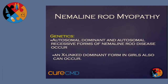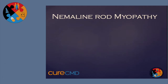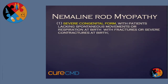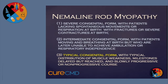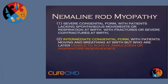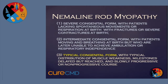Genetically, the condition can occur in both autosomal dominant and recessive forms. An X-linked variant can also occur in the female population as well. There are three different types which can range in severity: the severe form, intermediate, and a typical congenital form.